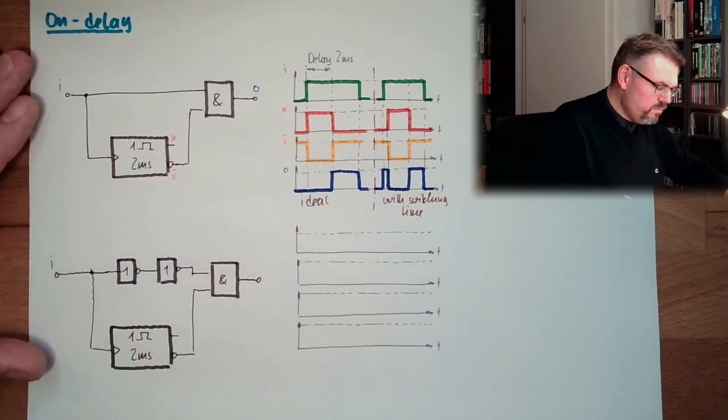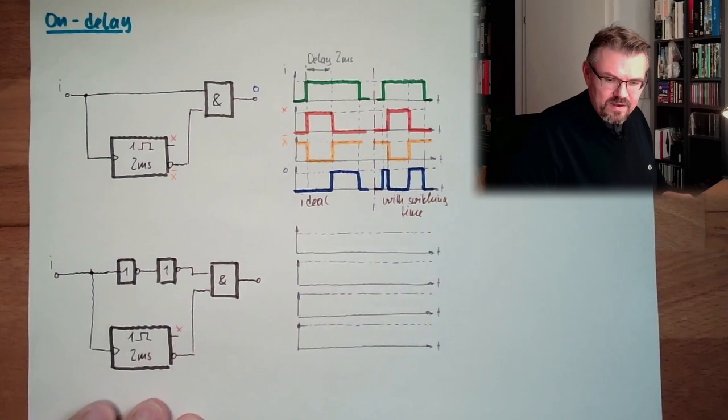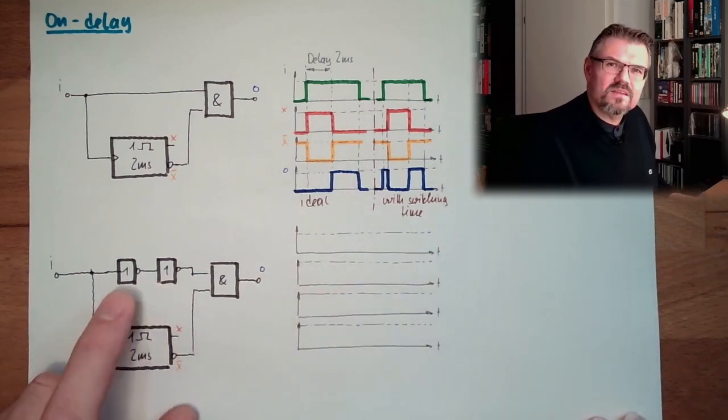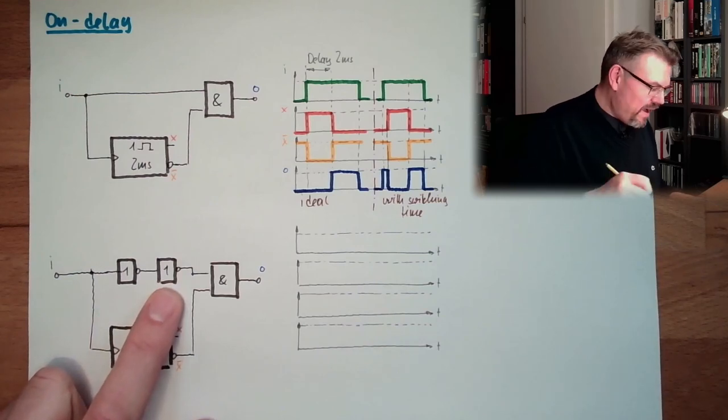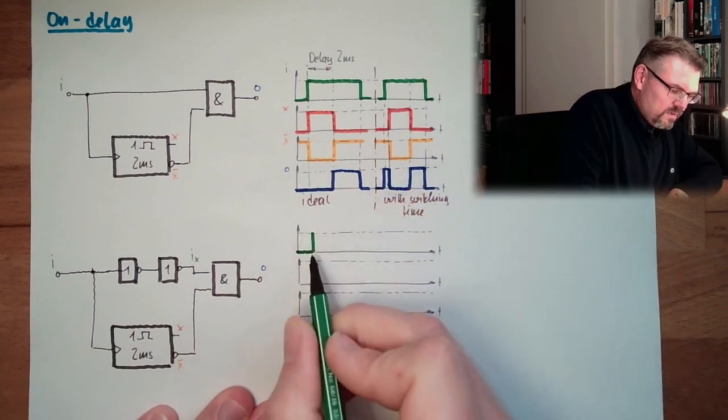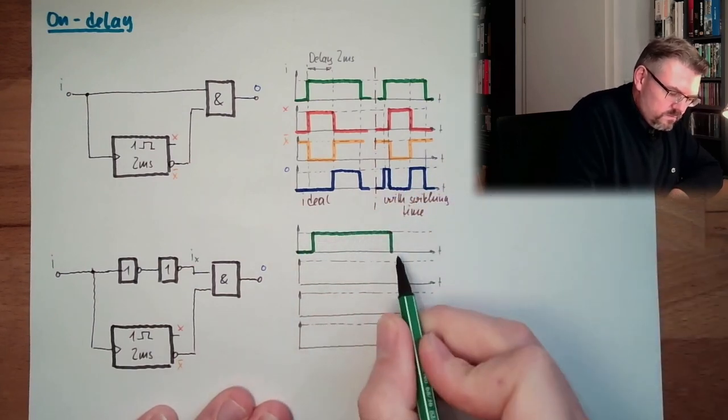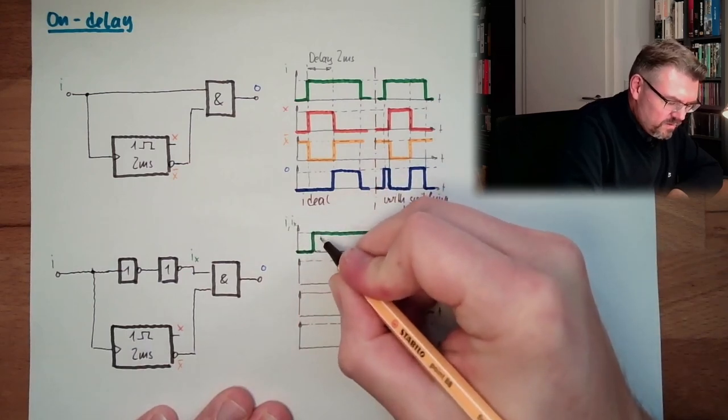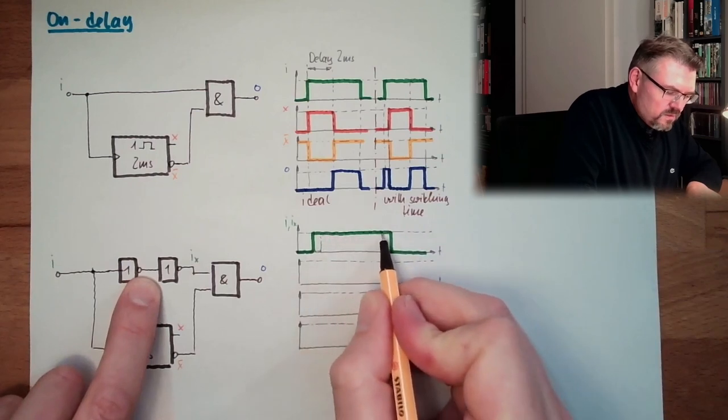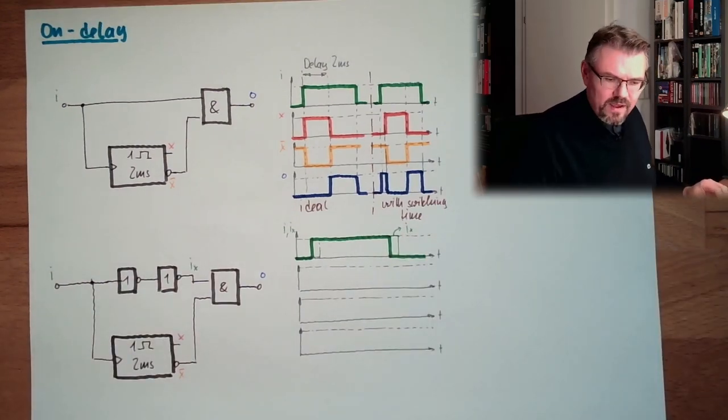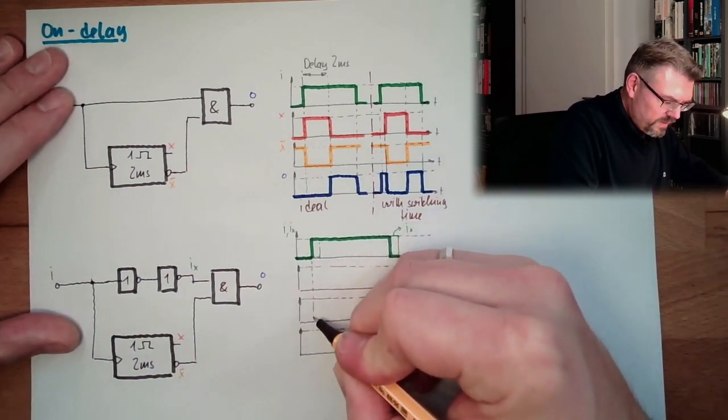So we have here I, the input. We have here again X, and we have again here of course NOT X, and we have again here the output O. Those two things, they don't have any logic sense. They are only there to delay from I to call it IX. So let's zoom in a little bit. We have I going into high, and here IX, IX is a little bit delayed, the switching element of those two things. This is IX here, this is the thin line.